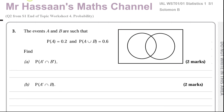This is our Venn diagram. The rectangle represents the universal set. This circle is A and this circle is B. The probability of A is 0.2, so the probability of something in this circle is 0.2. And the probability of A union B is 0.6, so the whole thing — both circles together — is 0.6.